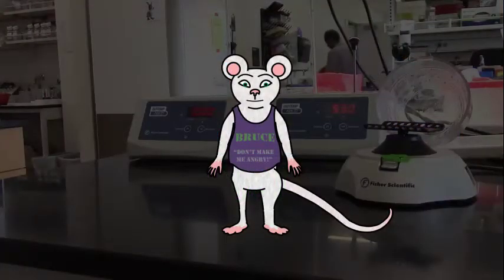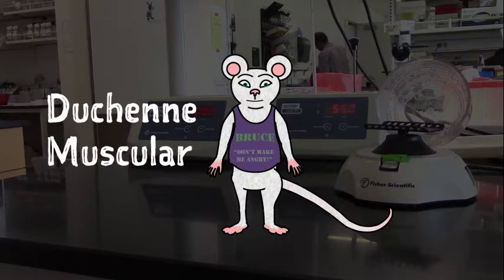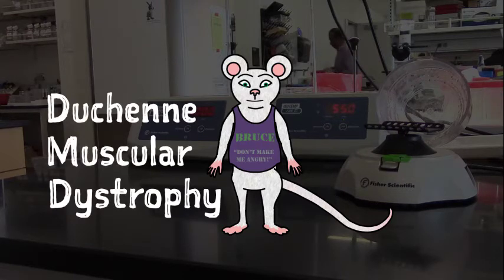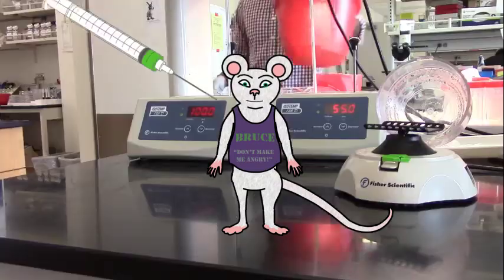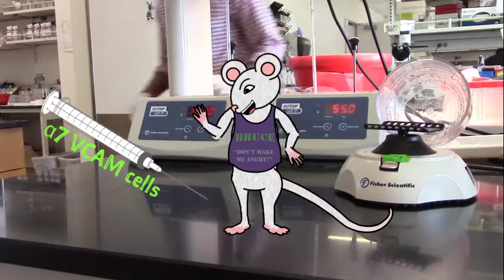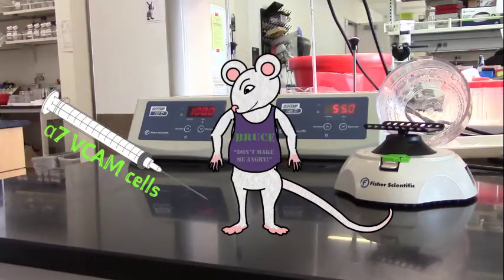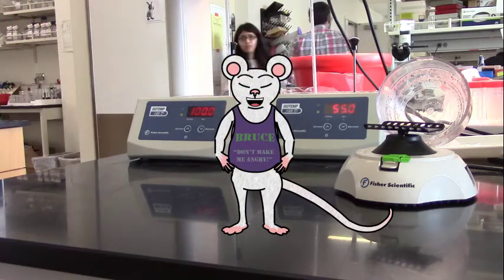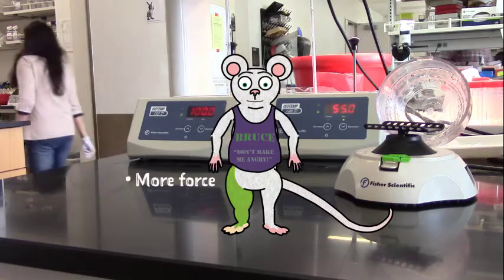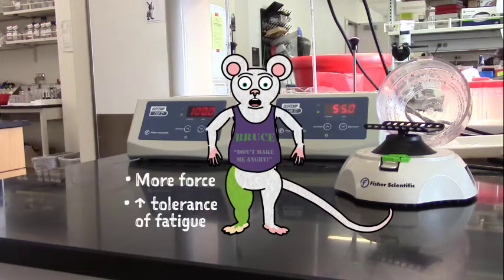In our research, we use an animal model of Duchenne muscular dystrophy, a genetic disease of muscle weakness caused by a lack of the muscle protein dystrophin. Disease animals that have received alpha-7-VCAM cells develop muscles on the treated side that produce more force and have a higher tolerance of fatigue compared to the same muscles on the untreated side.